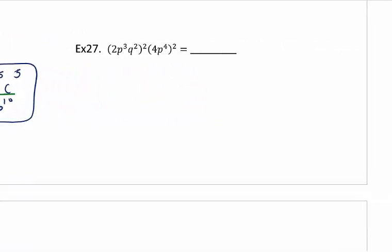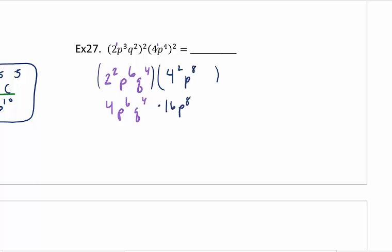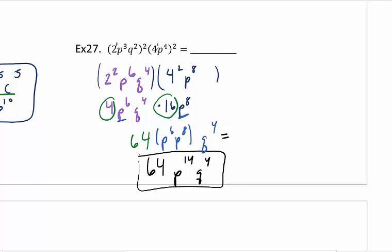So my last problem here, number 27, again, pause it, try to do it yourself first. Make sure you distribute to each base. So for the first parenthesis, we should get 4, p to the 6th, q to the 4th. And out of the second parenthesis, I'm going to put that in a different color. We should get 4 squared, p to the 8th, which is the same thing as 16, p to the 8th. And so now, again, I'm going to use my commutative and change my order. So 4 times 16, I'm going to multiply my coefficients together, which gives me 64. And then I have a p and a p, so I'm going to add those exponents. So I'm going to write that out just so you can see what I'm doing. And yes, it's okay to skip that step. So my answer here should be 64, p to the 14th, q to the 4th. Please, please, slow down when you're doing these problems. Super easy to make mistakes, and these are the ones you need to practice more for your quiz and your test.